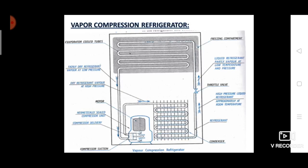The high pressure, high temperature vapors of the refrigerant are passed to the condenser. In the condenser, heat is absorbed from the refrigerant vapors and rejected to the surroundings. When the vapors give off their heat, they change phase from vapor to liquid. At the end of the condenser coil, you have a liquid refrigerant at high pressure and atmospheric temperature.